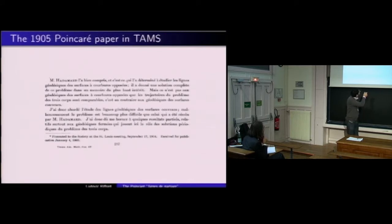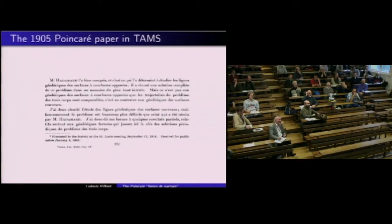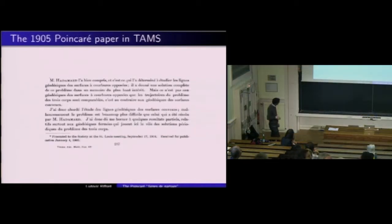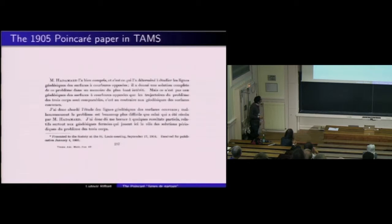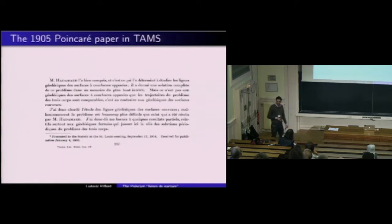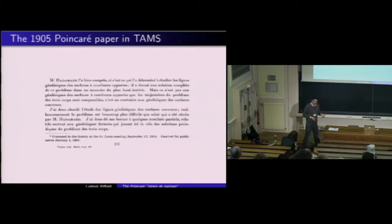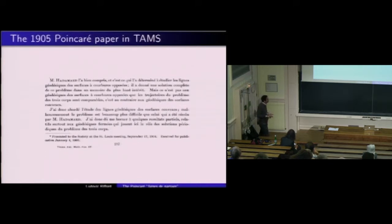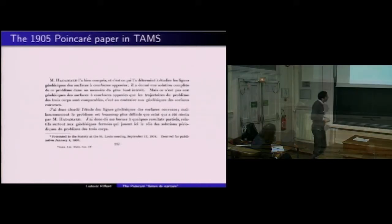Comme vous avez pu le remarquer en note de bas de page, ce papier est issu d'un exposé qu'a donné Poincaré le 17 septembre 1904 à Saint-Louis. Ce jour-là, Poincaré donnait un exposé dans le cadre de la 11e conférence de l'AMS, qui se tenait les vendredi et samedi 16 et 17 septembre 1904. À l'époque, la société mathématique américaine regroupait moins de 500 membres, et 50 personnes se sont déplacées pour assister à l'exposé de Poincaré.